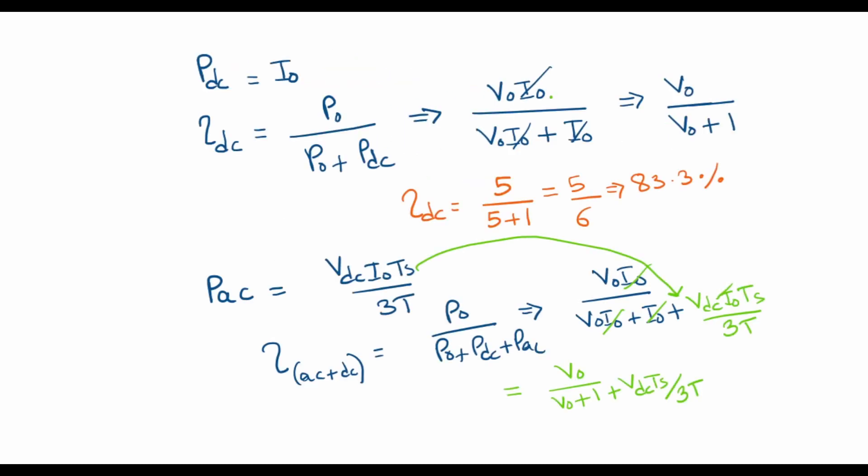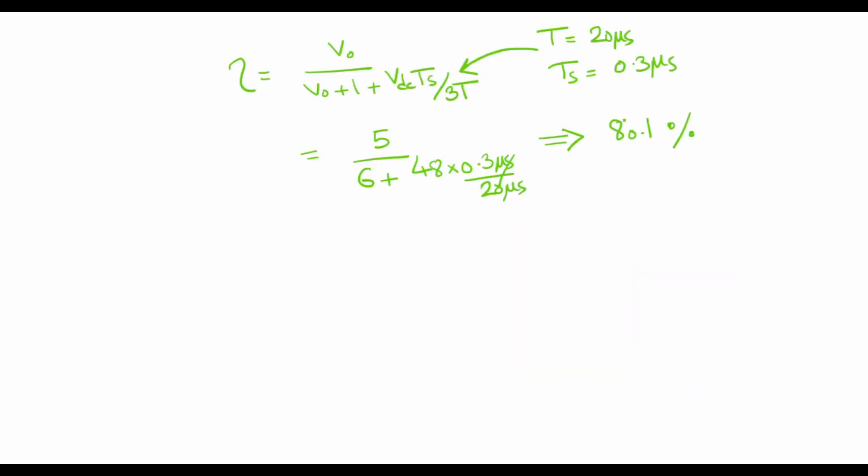Comparing this with the DC efficiency, we see that almost 17 percent of the loss was contributed by the conduction loss in the diode as well as the power converter. And 3 percent of the loss is attributed to the switching loss.